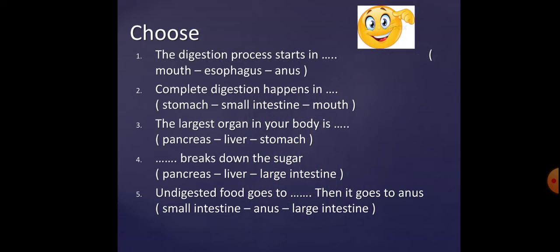Let's check some key points. Number one: digestion starts in the mouth. Number two: complete digestion happens in the small intestine — in the stomach it is incomplete. Number three: the largest organ in the body is the liver. Number four: the part that breaks down sugar is the pancreas.